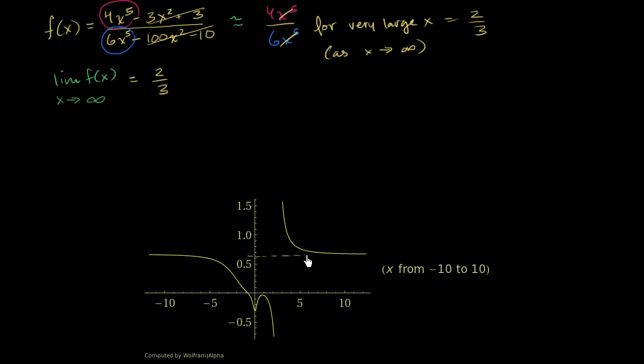We have a horizontal asymptote right at 2 thirds. So let me draw it as neatly as I can. So this right over here is y equals 2 thirds. The limit as x gets really large, as it approaches infinity, y is getting closer and closer to 2 thirds.